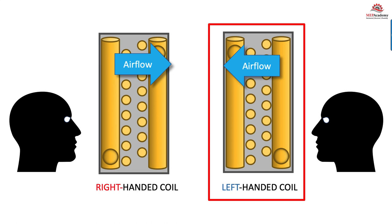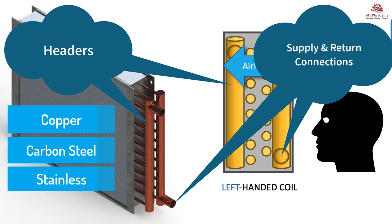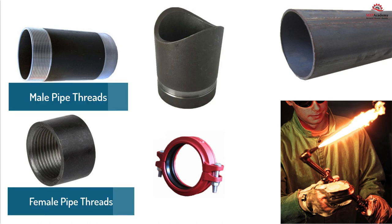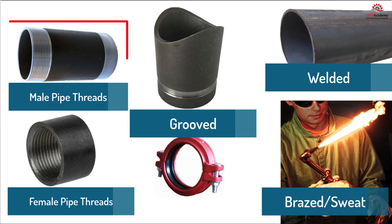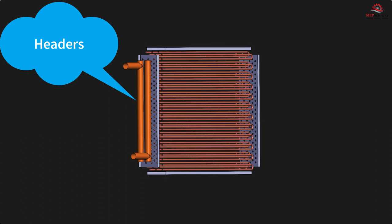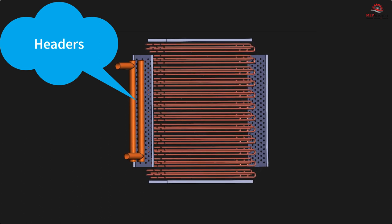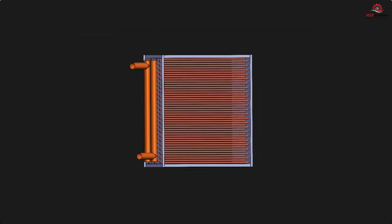Headers are provided for the supply and return connections to the coil, and can be provided in materials such as copper, carbon steel, stainless steel, and red brass. Piping connections can be provided in male or female threads, grooved, welded, or brazed sweat. Male threaded connections are common up to 2.5 inches. The header serves several purposes: it provides a method to connect all the individual tubes in the coil to one larger pipe, which can then connect the system piping to one or more inlet and outlet connections. The header allows the water to be distributed to the smaller connecting tubes.